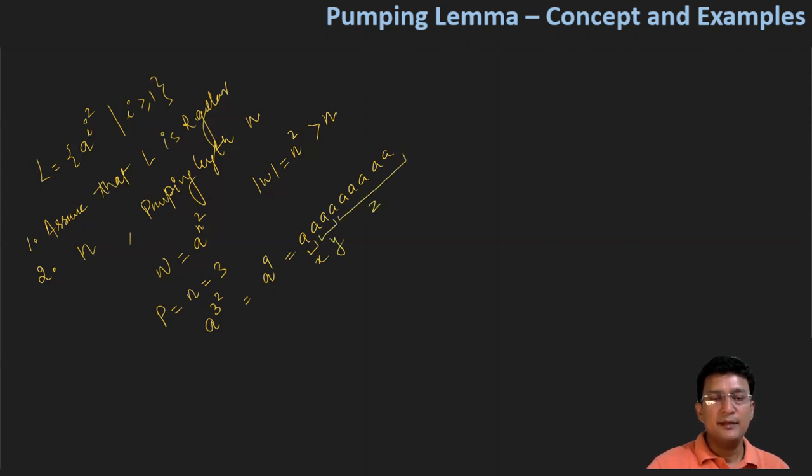So we saw that the length of y is greater than zero, it means it is positive. Second condition is that the cumulative length of xy should be less than or equal to the pumping length P. In this case, pumping length we assumed is 3, so we say that the length of xy is equal to 3, and it's satisfying this condition.